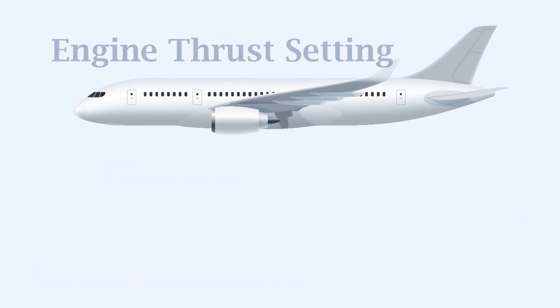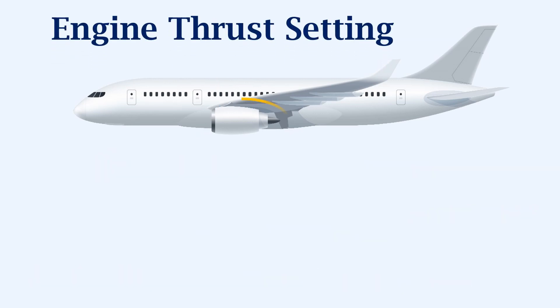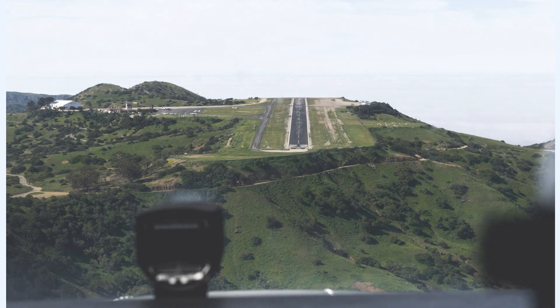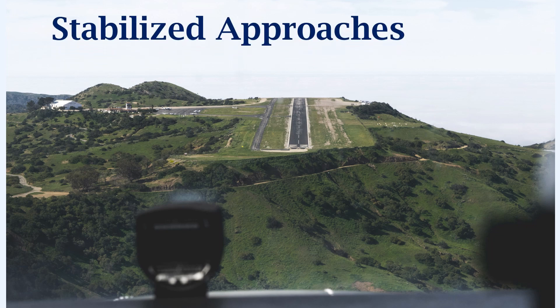The engine thrust setting. Since the aircraft is descending, the engine thrust can be reduced, but the engine should be stable and the thrust provided by the engine will be a little above idle. In general, for stabilized approaches, these conditions should be satisfied.